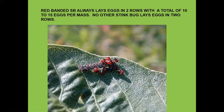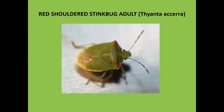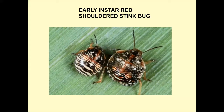Red banded stink bug lays its eggs in two rows. As it hatches, the immature stage is a pretty red color. Red banded stink bug is similar to the red shoulder stink bug, but differs from the red shoulder because it has an abdominal spine, while the red shoulder stink bug does not. The red shoulder stink bug is a little bit shorter. The early instars of the red shoulder stink bug have a kind of zebra stripe appearance.